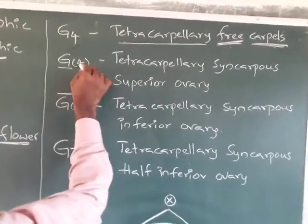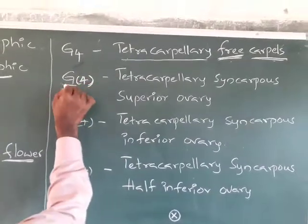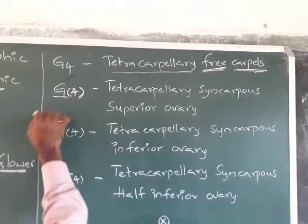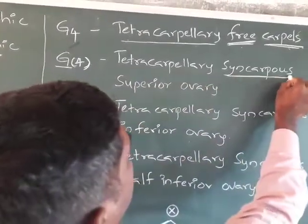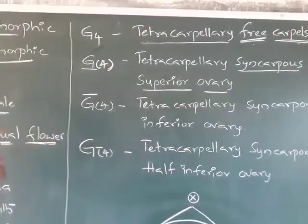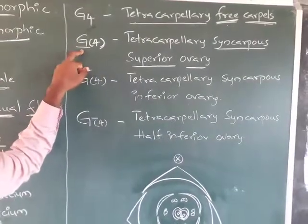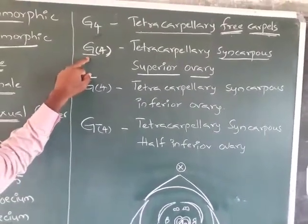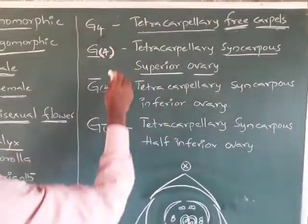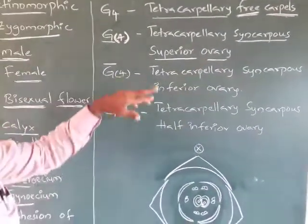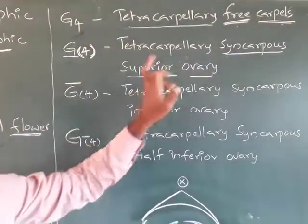G with the number 4 in brackets, with a line below the G, indicates tetracarpellary syncarpous superior ovary. The line below the G indicates superior ovary, and the brackets indicate syncarpous — meaning the carpels are united.